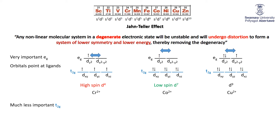Jahn-Teller effects also occur when the degeneracy is in the t2g, but this is much less important and not nearly as significant an effect.